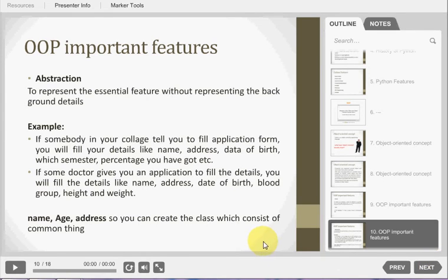Then we consider here one example. If somebody in your college asks to fill one particular form, at that moment you fill some entity such as name, your address, your date of birth, your semester, your percentage. While a doctor will give you an application to fill the details. At that moment you fill name, address, your date of birth, your blood group, your height and your weight.